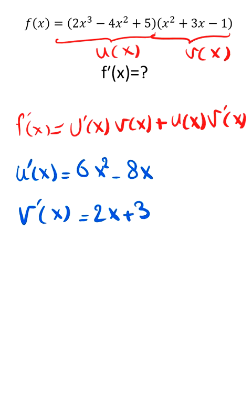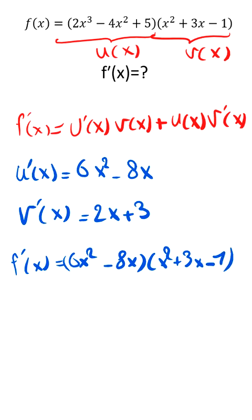So by using this formula, the final answer is 6x squared minus 8x times x squared plus 3x minus 1 plus 2x to the third power minus 4x squared plus 5 times 2x plus 3.